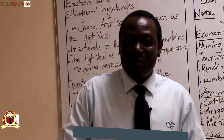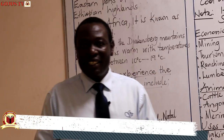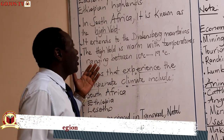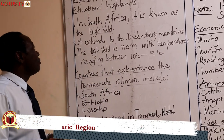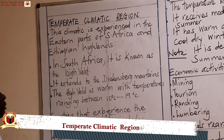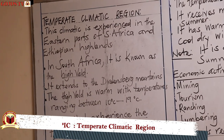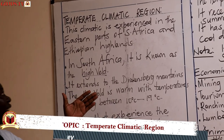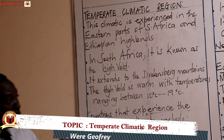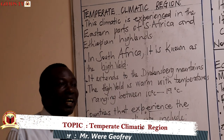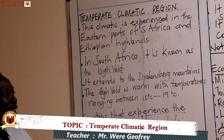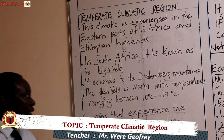Dear girls and boys, our candidates, you all come to yet another lesson in social studies. Today we are going to look at the temperate climatic region. This climatic region is experienced in eastern parts of South Africa and the Ethiopian highlands. We looked at the climatic regions, so you can go back and review that chart — that map of Africa — and you'll see where it is located.